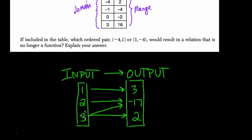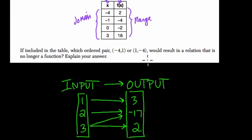So for example, 3 is the problem here. 3 goes to both negative 17 and 2, that's not a function. So we have to add a point here that breaks this function. So which of these points would cause an issue? Well, the answer is negative 4, 1.